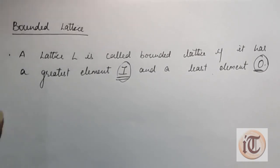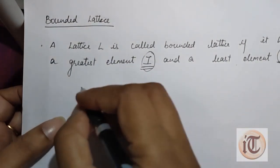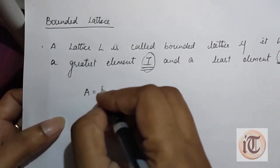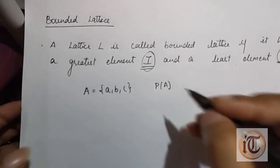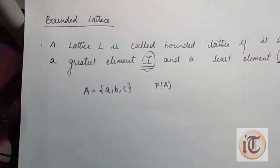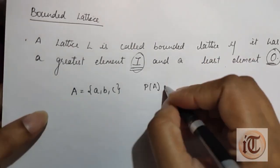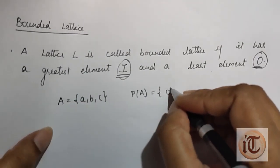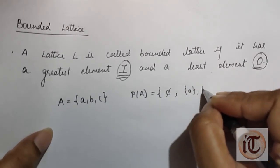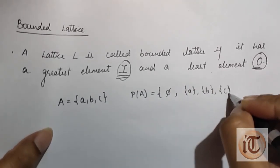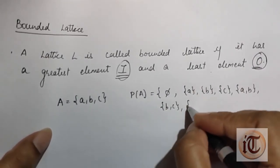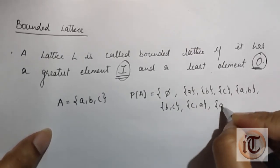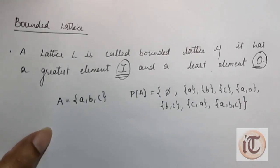I am taking one example. Suppose we have a set A with elements a, b, and c. For the power set of A, we need to find the greatest element and least element. The power set is represented as: phi, {a}, {b}, {c}, {a,b}, {b,c}, {c,a}, and {a,b,c}. This is the power set of set A.